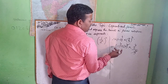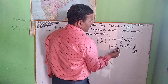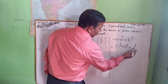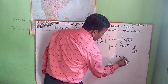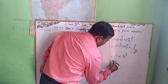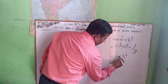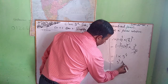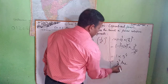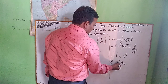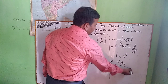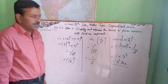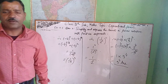Evaluating minus 1 raised to power 4 — multiplying minus 1 four times — gives us 1. So we are left with 1 into 5 raised to power 4, which equals 5 raised to power 4. That is the answer. Thank you for being with me.